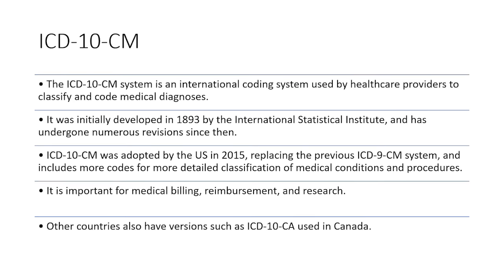The first version of ICD was developed in 1893 by the International Statistical Institute. It was initially designed to collect and classify data just based on cause of death. But then later on, we needed more expansion, so it included lots of other health conditions, not just data on cause of death. The ICD has undergone a lot of revisions over the years, and each version introduces new codes and updated classification.